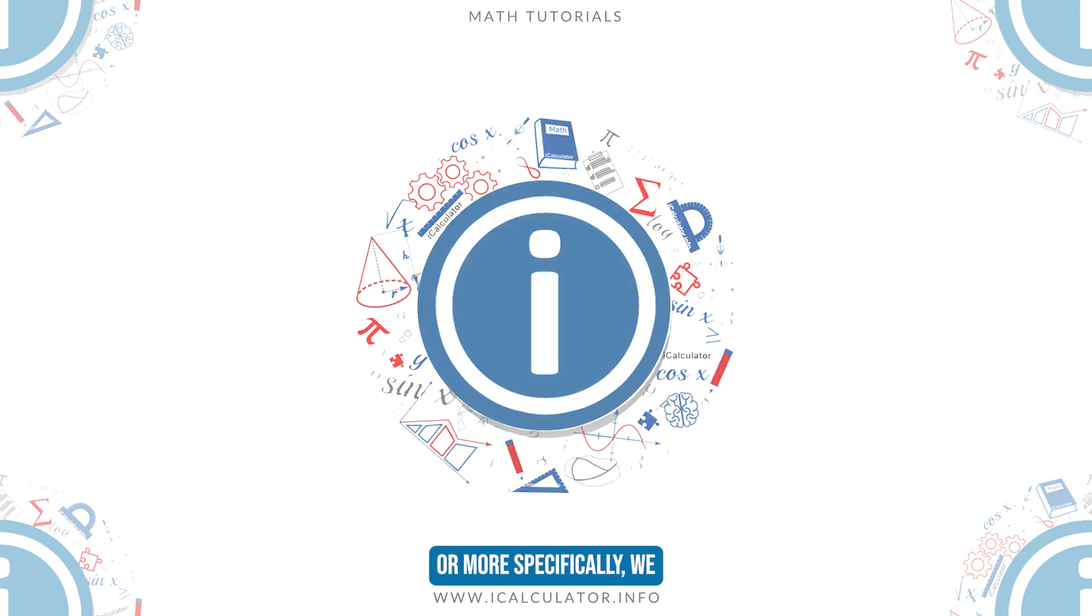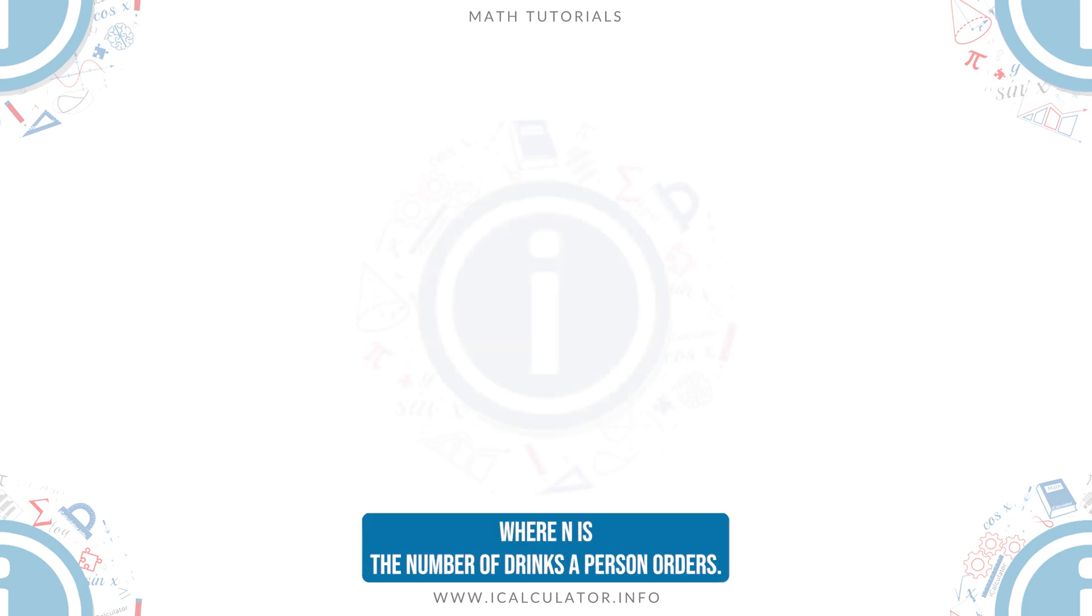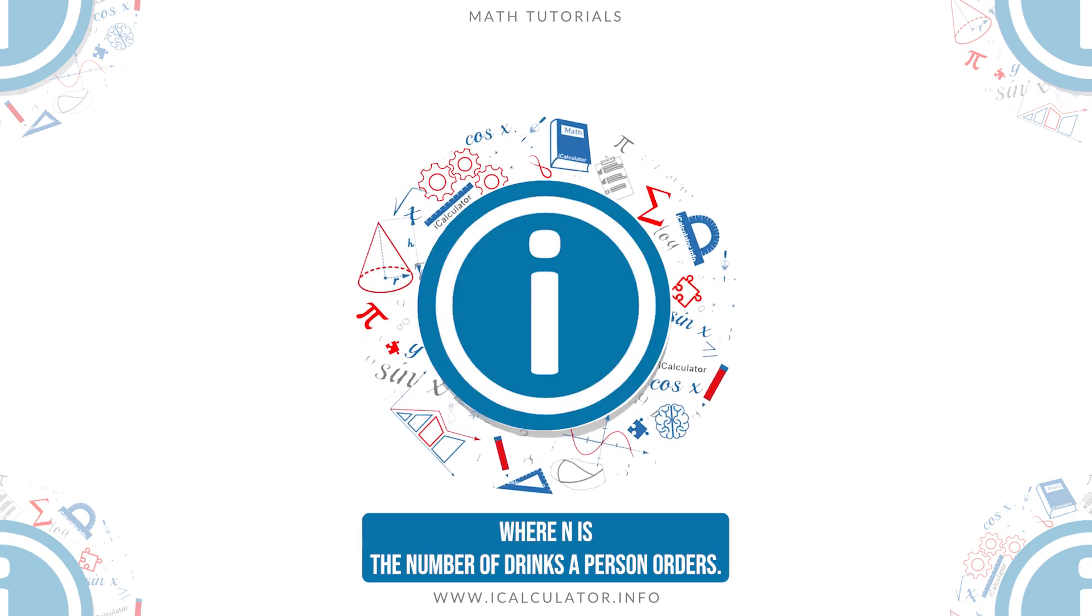Or more specifically, we obtain the following shown on screen, where N is the number of drinks a person orders.